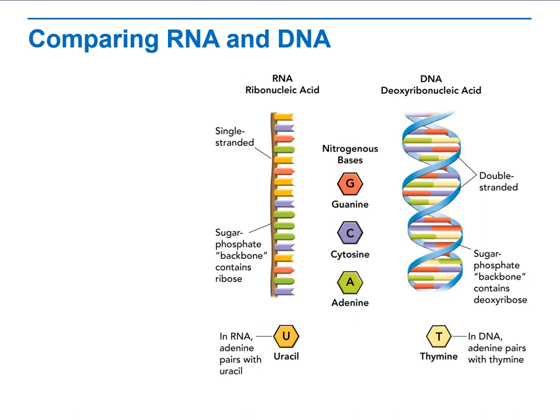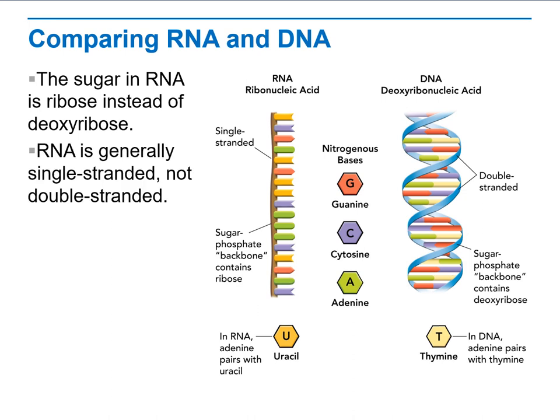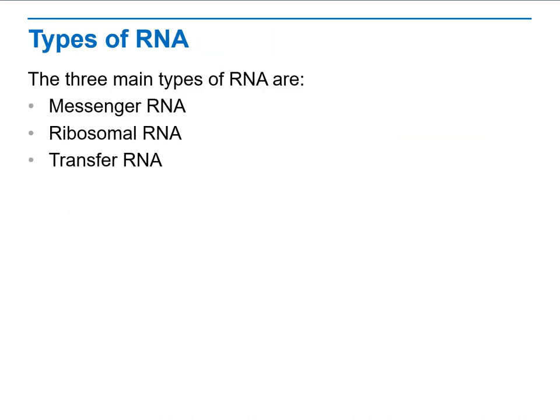The third difference is that DNA is deoxyribose, meaning it is missing one oxygen. On the other hand, RNA has the complete oxygen, so the sugar in RNA is ribose instead of deoxyribose. RNA is generally a single strand, not a double strand, and RNA contains uracil in place of thymine.